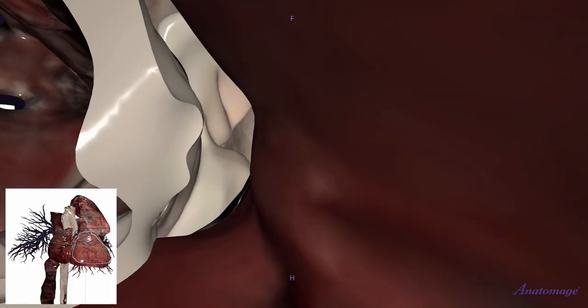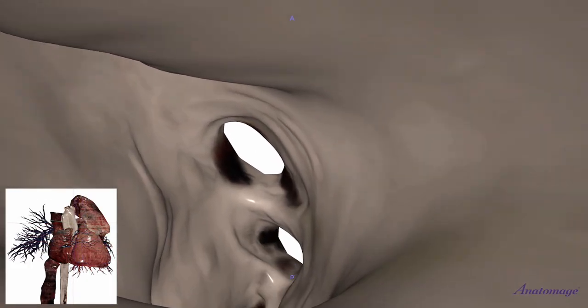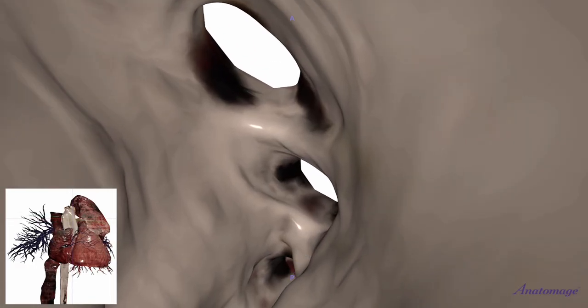Look at all the trabeculae carnea. Let's do a U-turn. And there's the aortic valve. Let's go through the aortic valve. We're now in the ascending aorta going into the ascending aorta to the aortic arch.